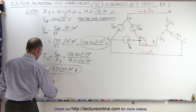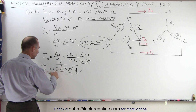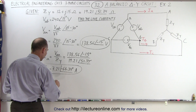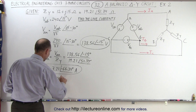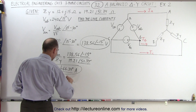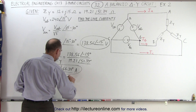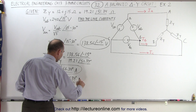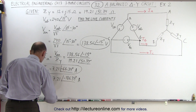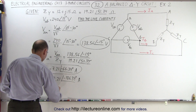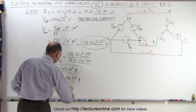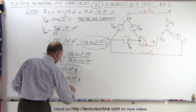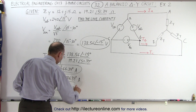Now we find the next two line currents. I sub B is equal to I sub A in magnitude but another 120 degrees apart in phase angle, so 7.21 with a phase angle of minus 186.34 degrees. And I sub C is 7.21 with a phase angle of minus 306.34 degrees.